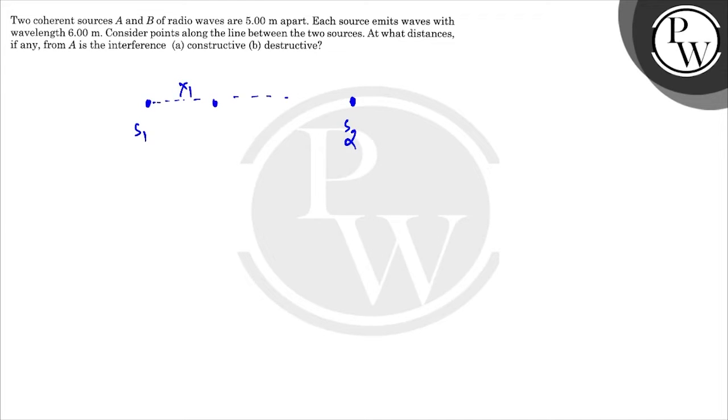The path traveled by the light from S1 is S1 to P, which is nothing but x1. The path traveled by S2 to P is x2.